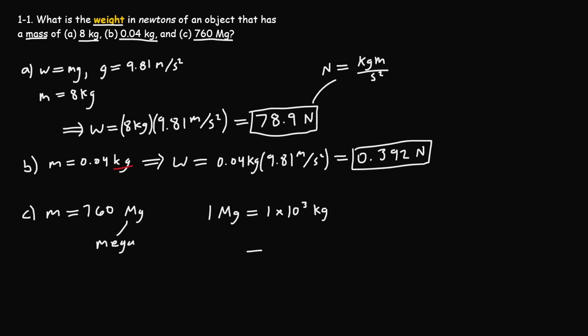Now that we have our conversion, we can write the equation: W equals 760 times 10³ kilograms times 9.81 meters per second squared.